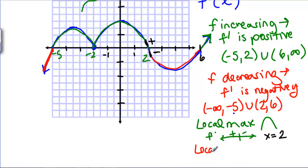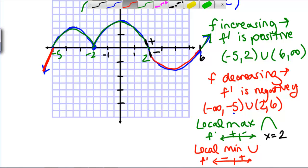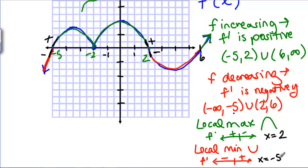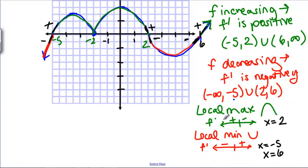A local min is the opposite — this is when F-prime is going from a negative to a positive Y-value. On our graph, that would be going from a negative Y-value to a positive Y-value at x equals negative 5, and again from a negative to a positive Y-value at x equals 6. So we've found our local maximums and local minimums from the F-prime graph.